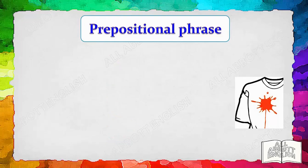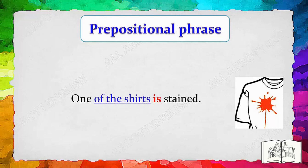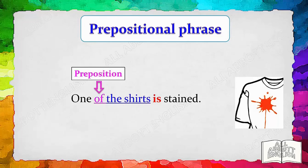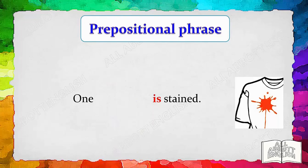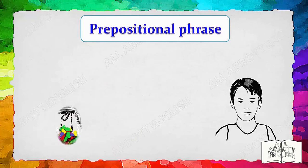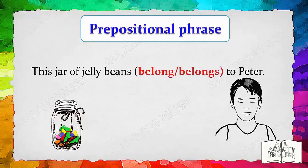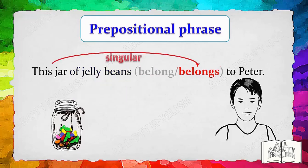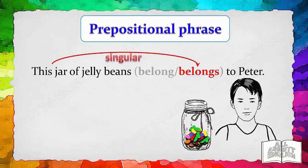Let's look at an example with a prepositional phrase: 'One of the shirts is stained.' The subject is 'one'; 'of the shirts' is a prepositional phrase beginning with the preposition 'of.' Therefore, the singular verb 'is' agrees with the singular subject 'one.' Here is another example: 'This jar of jelly beans belongs to Peter.' The subject is 'this jar'; 'of the jelly beans' is a prepositional phrase. Therefore, the singular verb 'belongs' is the answer, as it agrees with the singular subject 'this jar.'